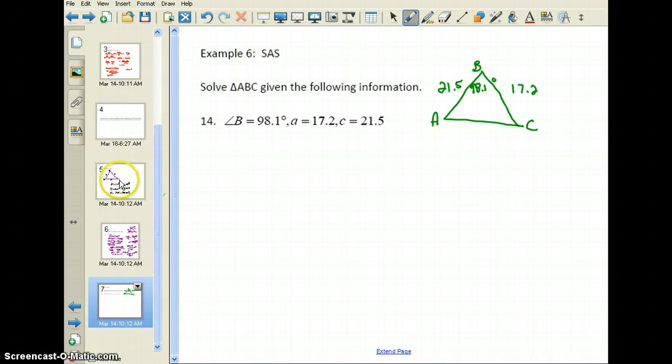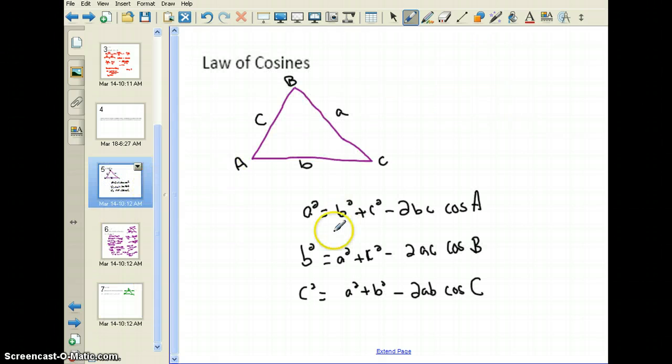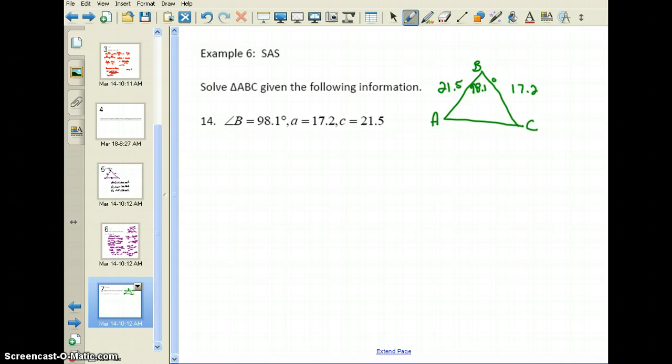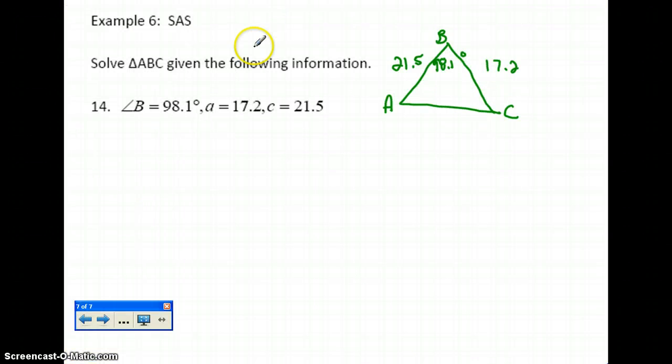There's lots of different choices of formulas that I can use, but I have angle B. So let's see which one of these formulas contain angle B. This one contains angle B, and the side that I can only find is side B. So I have to use this formula to help me find this. The formula is going to be B squared equals A squared plus C squared minus 2AC cosine B.